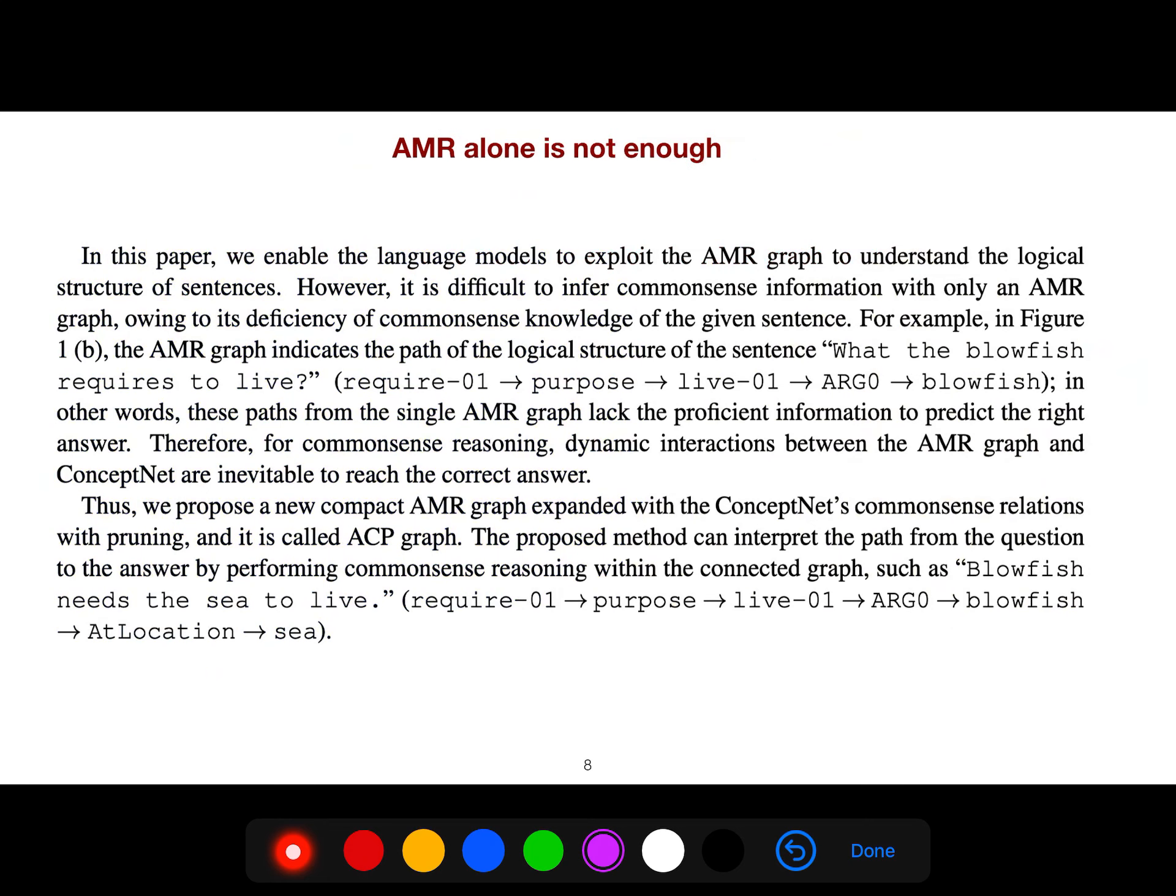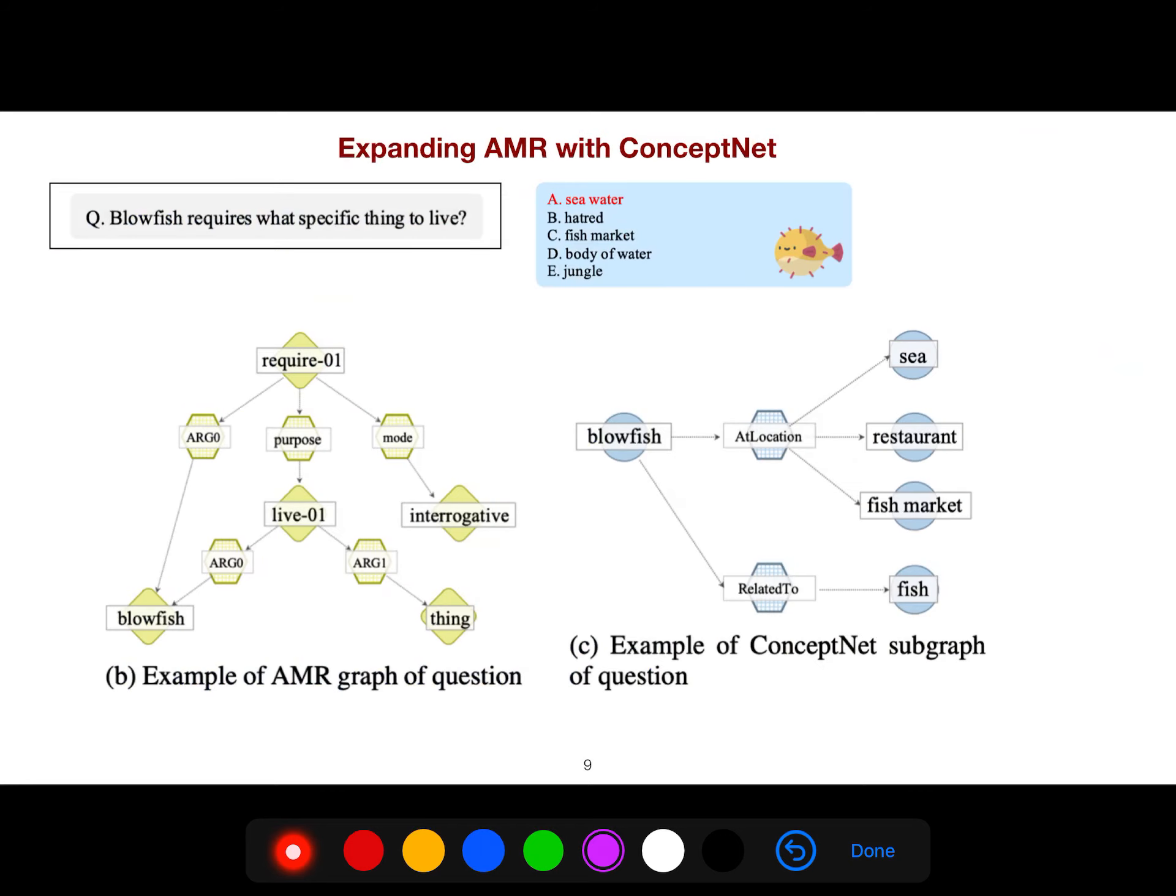AMR alone is not enough, we know that, so we expand AMR with ConceptNet. Knowledge graphs are great. For example, for commonsense reasoning there are something that is not written in all text because everybody knows that by default. So we need something that is not explicitly written in all text and documents and we can discover it by using ConceptNet.